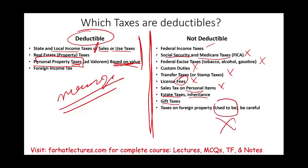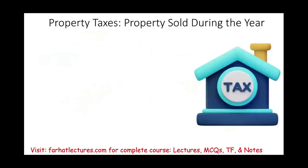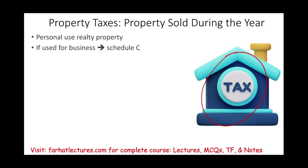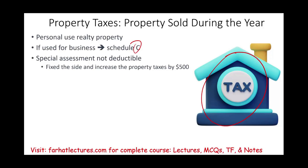Let's talk a little more about property taxes. Simply, if you own a home in the U.S. for personal use, depending where you live, it could range from $3,000 up to $50,000 in some houses, like in Beverly Hills, California. If you have a property that's used for business, then those property taxes will be on Schedule C. If your property is rental, it will be on Schedule A. As mentioned, special assessments are not deductible — like if they fix the sidewalk and increase the property tax by $500, that's not deductible.